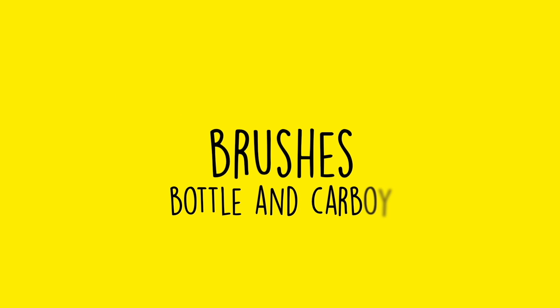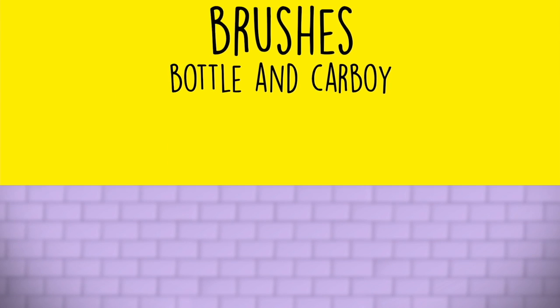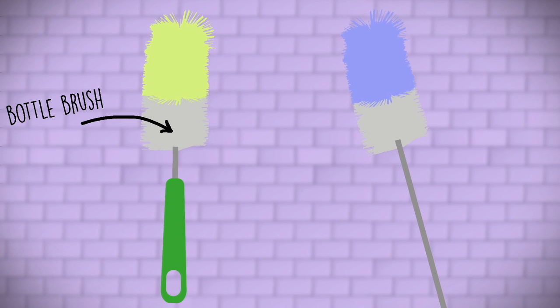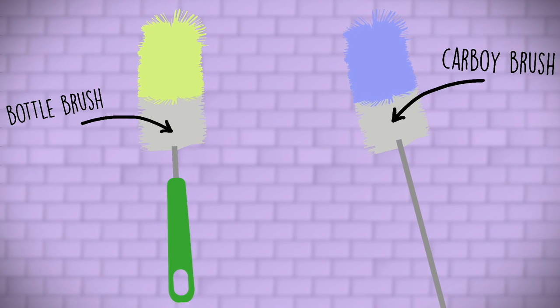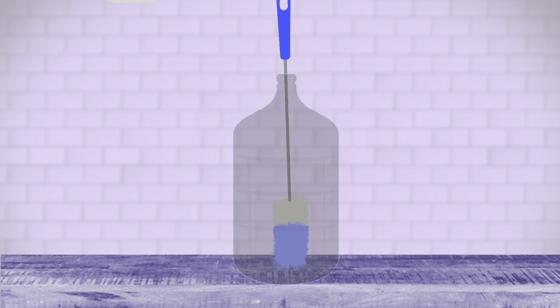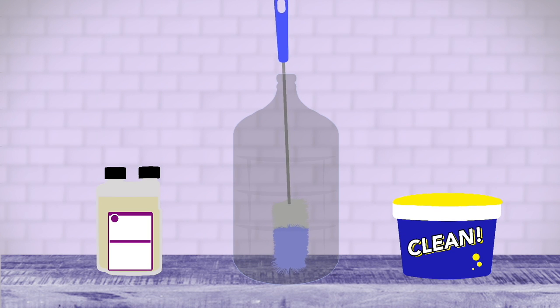Brushes. Bottle and carboy. Make sure to pick up some brushes for bottles, if you're recycling, and for your carboy. It is challenging to clean the insides of these vessels, but with a soak in Star San or OxiClean and a little scrubbing with the proper brush, you'll have clean glass in no time.